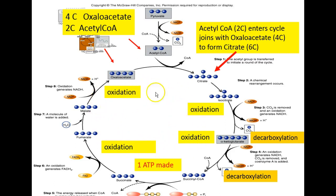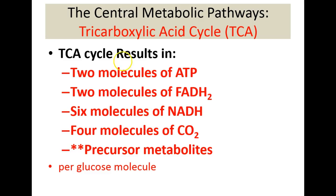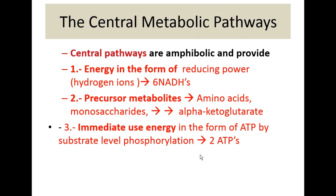Notice the high number of oxidation steps, which have gathered hydrogen atoms that will represent energy in the next step. The result of the TCA or Krebs cycle is two molecules of ATP per glucose, two molecules of FADH2 per glucose, six molecules of NADH per glucose, four molecules of CO2 per glucose, plus precursor metabolites that can be used to make amino acids.